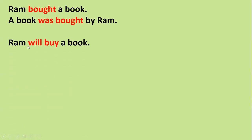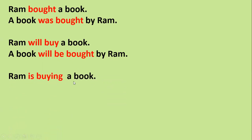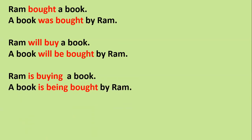Next: 'Ram will buy a book' — simple future. The passive is: 'A book will be bought by Ram.' See the change — 'will buy' becomes 'will be bought'. For present continuous tense, you need to add 'being': 'A book is being bought by Ram'.